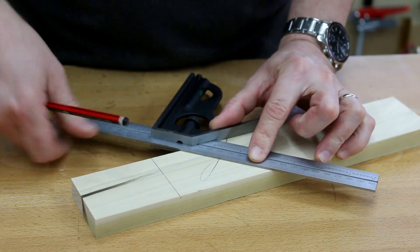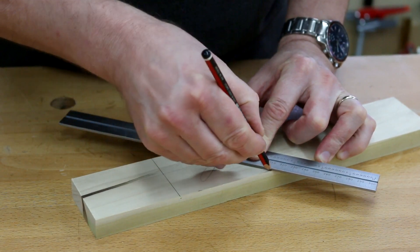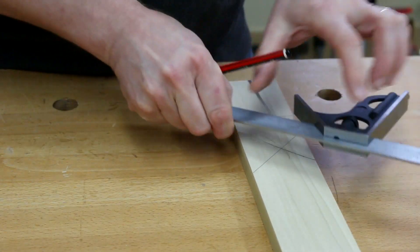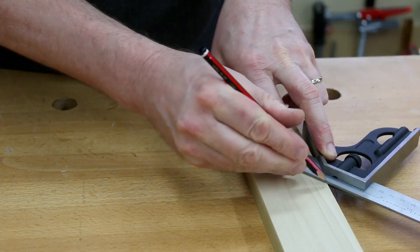Or you might use him again for 45 degrees. You can mark your lines on there. You can come back to a square from the other way if you were doing something like a bird's mouth.